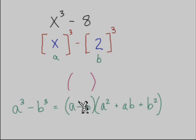So the first set of parentheses is a minus b, and that's going to be x minus 2. The second set of parentheses starts with a squared, so that's going to be x squared. We have a plus, and then we have a times b, so that's x times 2, and we want to write that as 2x. And finally, we have plus 4.